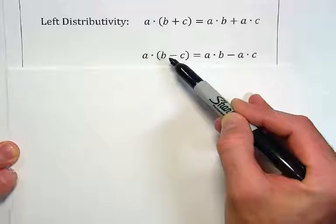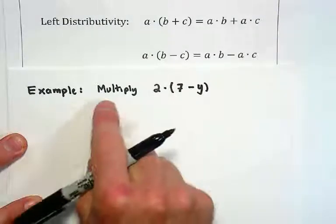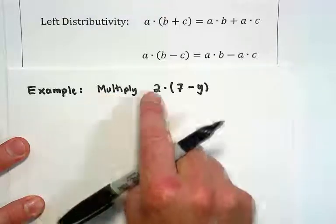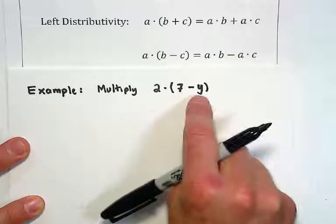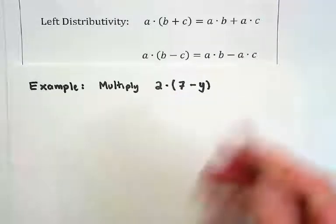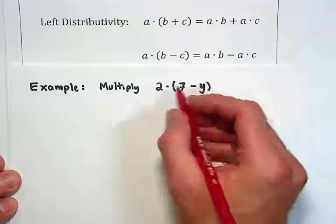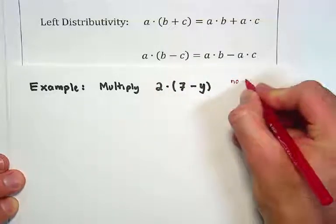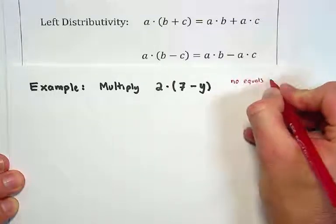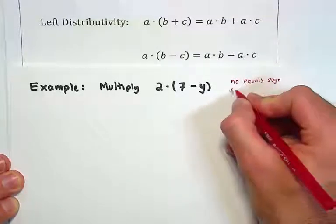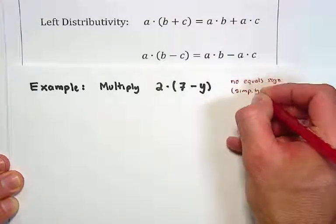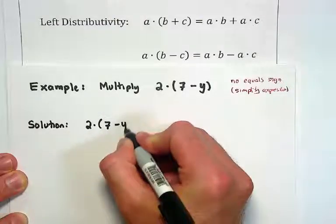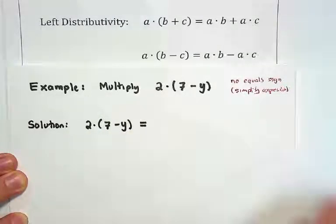Just like we had left distributivity of multiplication over addition, we also have left distributivity of multiplication over subtraction. Let's take a look at an example. We'll read the entire statement of the problem out loud: multiply 2 times the quantity 7 minus y. Before we begin our solution, we ask ourselves: is there an equal sign in this mathematical statement? There is no equal sign, so we call this an expression and we're going to simplify. We begin by writing down the entire original expression in our own handwriting.